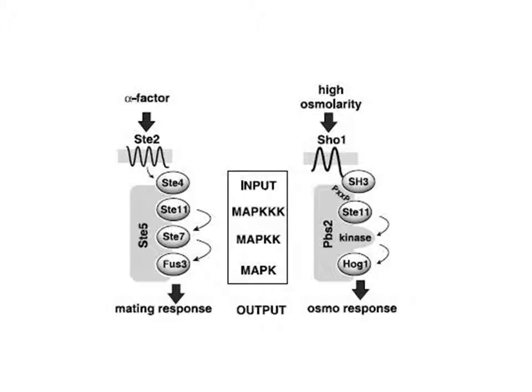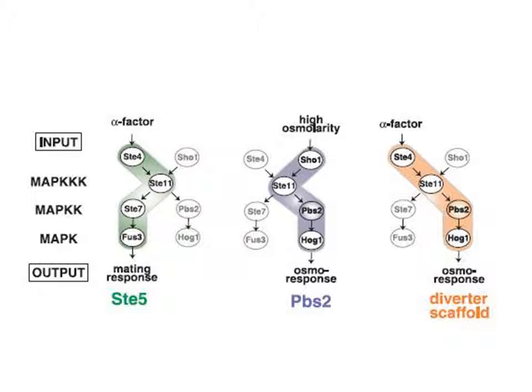This study demonstrates that the scaffold controls the flow of information amongst the kinases by making chimeras of two cascades present in yeast. Yeast respond to alpha factor with a mating response, and to high osmolarity with an osmo response. The authors show that they can change the responses to these inputs by adding different scaffolds. Addition of the native scaffolds, ST5 or PBS2, results in the normal responses. But if they add a chimeric diverter scaffold, they get cells that respond to alpha factor with an osmo response.